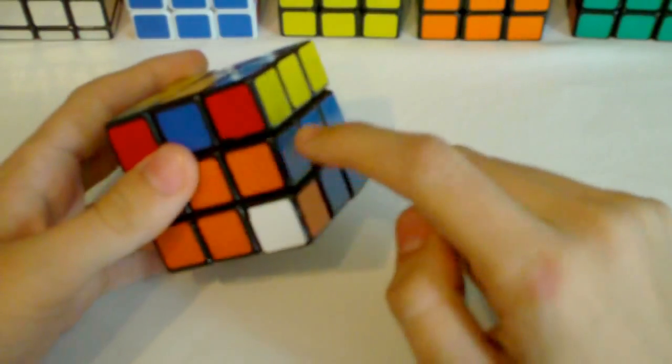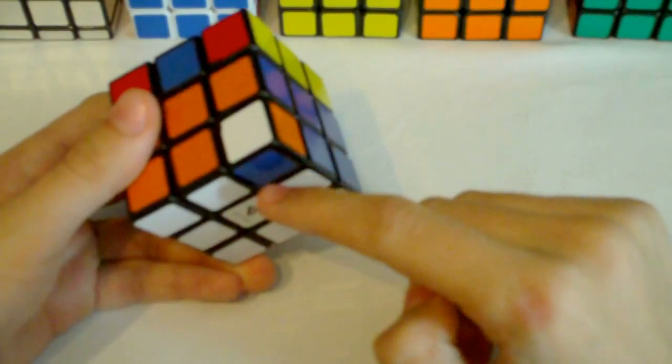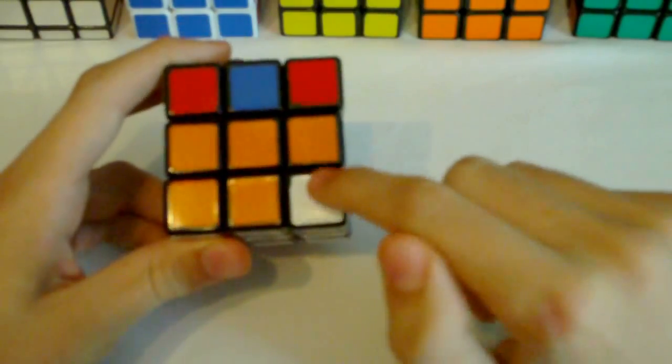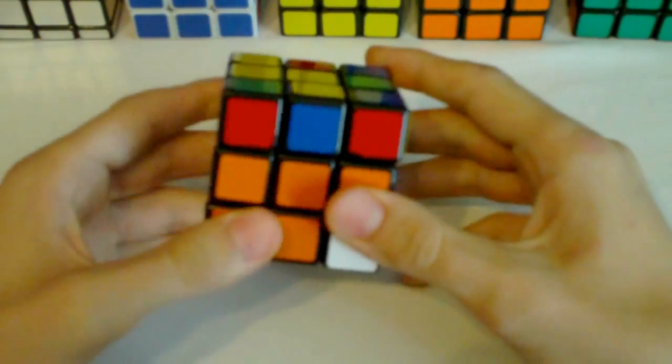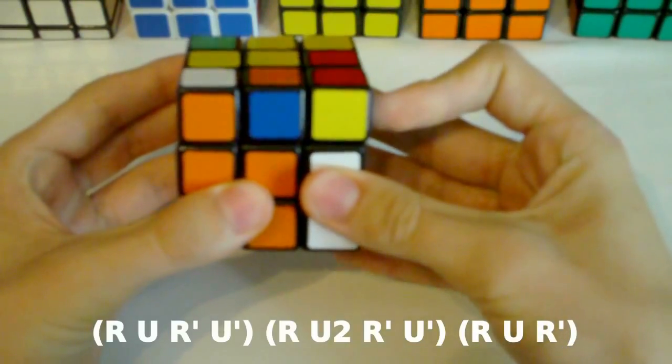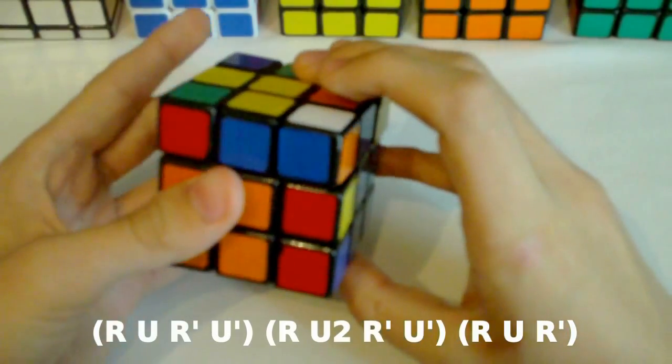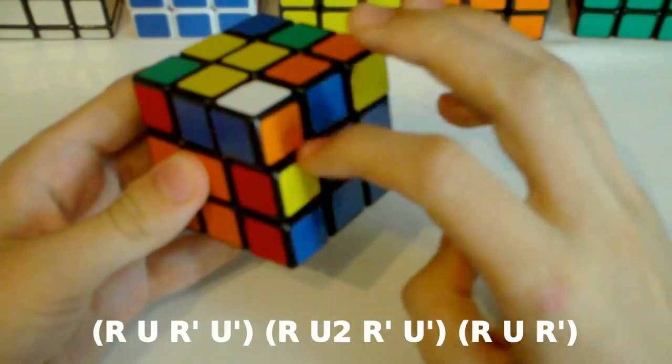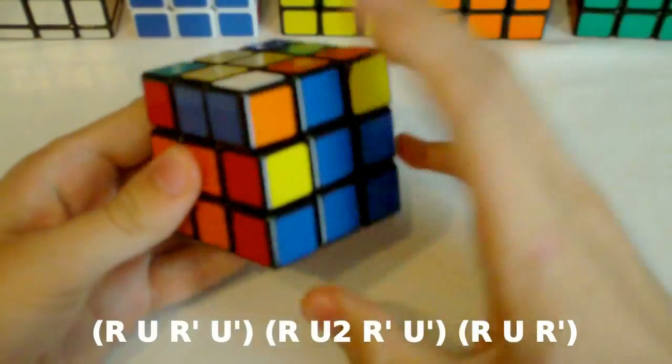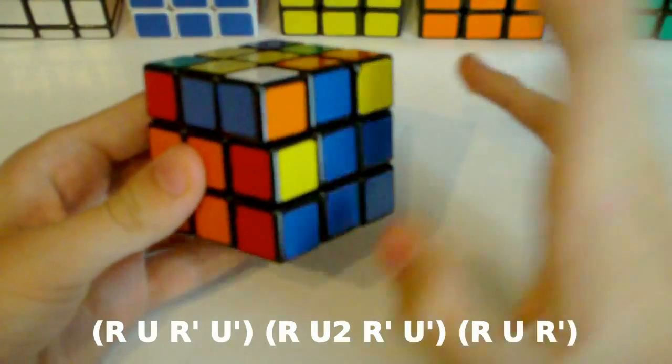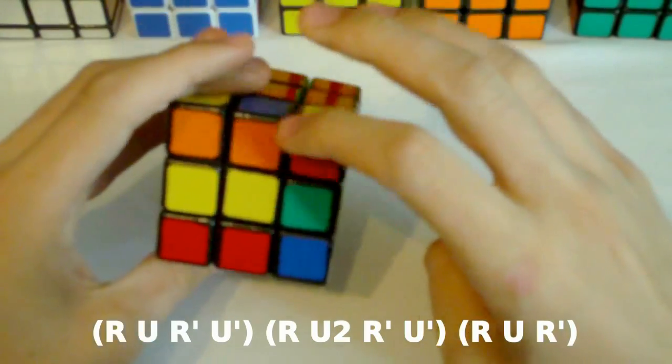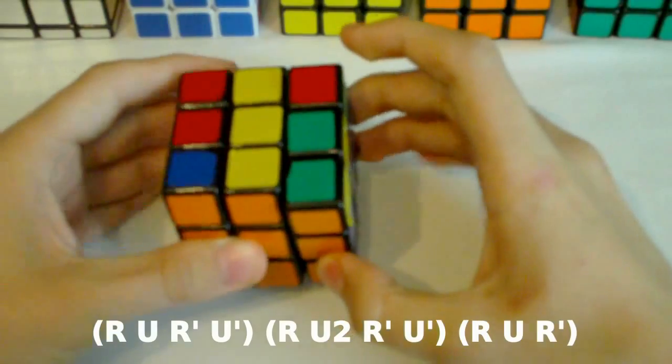Next we have this case. Here the edge is solved and the corner is in the right place, but it's twisted clockwise. So the white sticker is facing towards you. In this case we use this algorithm: R U R' U'. So we do the sexy move first and then you solve this case the way you would usually solve it. If you don't know how to solve this case, then this is how it goes: R U2 R' U' and then you just insert this with R U R'.